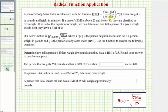If we solve this for H with our function as H of W, our new function would be H of W equals the square root of 703 times W divided by B, where H of W is the person's height in inches, W is the person's weight in pounds, and B is the person's body mass index, which for our problems will be 25.